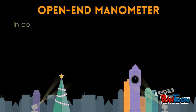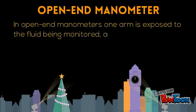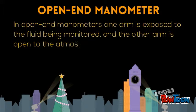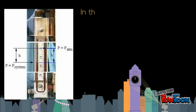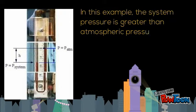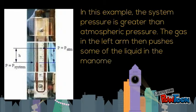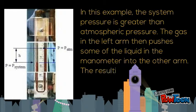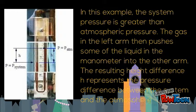In an open end manometer, one arm is exposed to the fluid being monitored and the other arm is open to the atmosphere. In this example, the system pressure is greater than atmospheric pressure. The gas in the left arm pushes some of the liquid into the other arm, and the resulting height difference, H, represents the pressure difference between the system and the atmosphere.